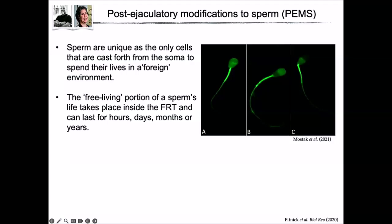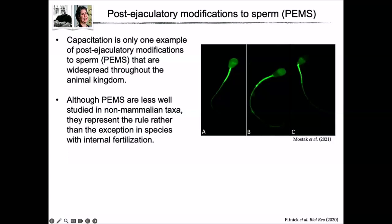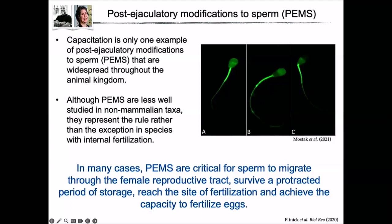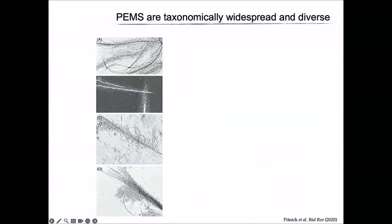Mammalian capacitation is only one example of post-ejaculatory modification of sperm — PEMs are in fact widespread throughout the animal kingdom. Although PEMs are less well studied in non-mammalian taxa, the examples I'll give hopefully convince you they're quite widespread and likely the rule rather than the exception. Where they have been studied experimentally, PEMs seem most likely to be critical for sperm migration through the female reproductive tract, survival during protracted storage, and spatial-temporal migration and capacity to fertilize eggs.